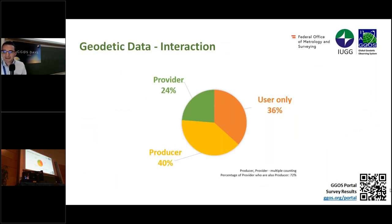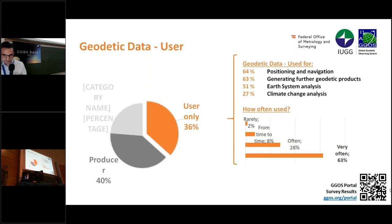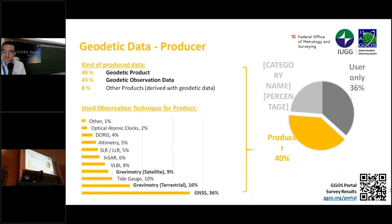Looking at user groups in more detail: one-third are only users, one-third are producers, and one-third are providers. From the user perspective, the majority use geodetic data for positioning and navigation and generating further geodetic products. Geodetic data is also used very often. From the producer perspective, the majority produce GNSS and gravimetry data. Half of the producers are producing geodetic products and the other half are producing observation data.